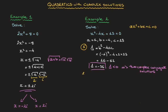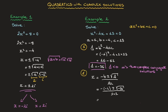That leads us to our second step, in which we actually calculate the solutions. The formula is exactly the same as for real numbers: x equals negative b plus or minus the square root of delta, all over 2a. Replacing b, delta, and a by their values gives x equals 4 plus or minus the square root of 36 times the square root of negative 1, all over 2. To get from the square root of negative 36 to the square root of 36 times the square root of negative 1, we use the same result as before.